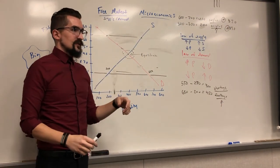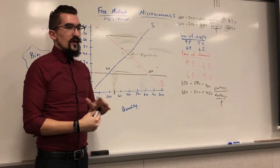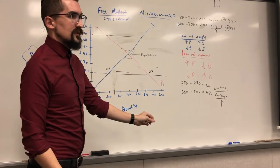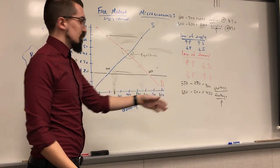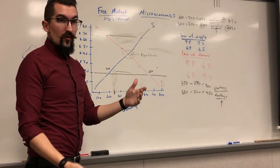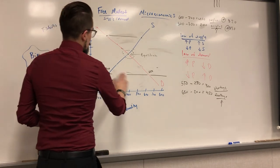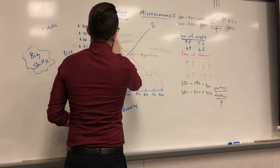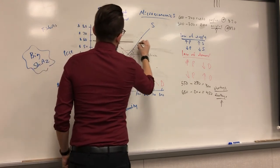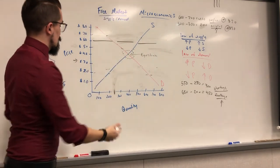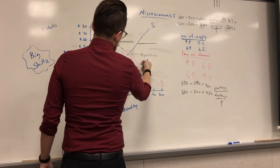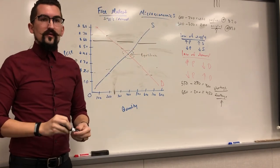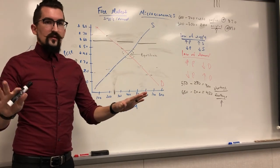That's how you calculate and look for a surplus and a shortage — we'll practice that throughout the year. On quizzes, they'll either give you a price like $30 and ask if you have a shortage, surplus, or equilibrium, and you figure it out from the graph. Or they might just give you a line and ask what it represents — you look at it and identify it as surplus or shortage, then calculate the number.